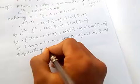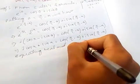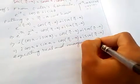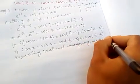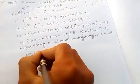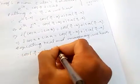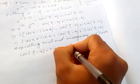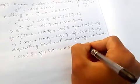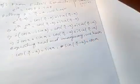Equating real and imaginary parts, we get: cos(π/2 - x) = sin x, and sin(π/2 - x) = cos x.